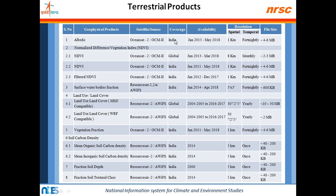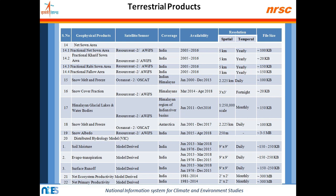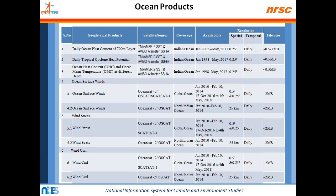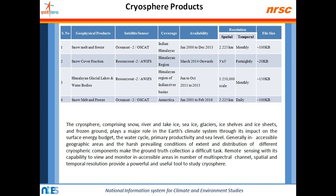The portal lists terrestrial products showing the geophysical product, satellite or sensor used, coverage — whether global or regional — availability dates, and both spatial and temporal resolution, with 22 terrestrial products available. Similarly, ocean data products based on different geophysical features of oceans are listed. Atmospheric products include only three items. Cryosphere products cover four different glacial features.